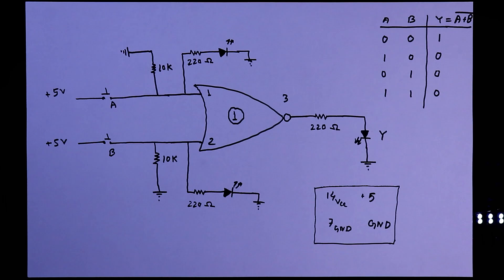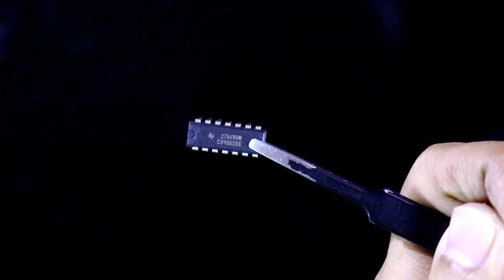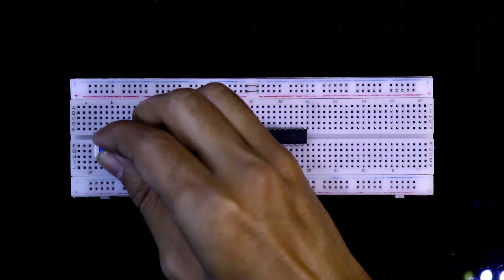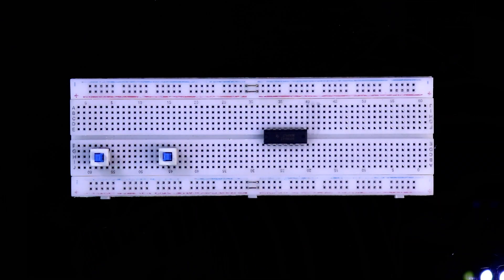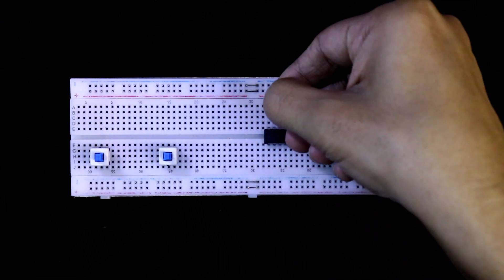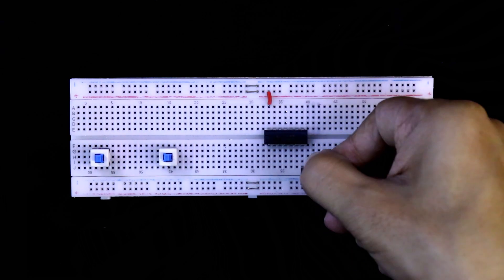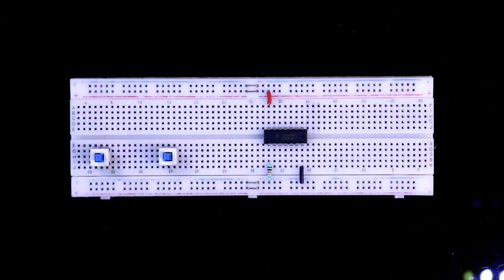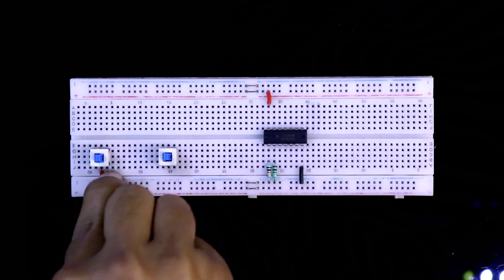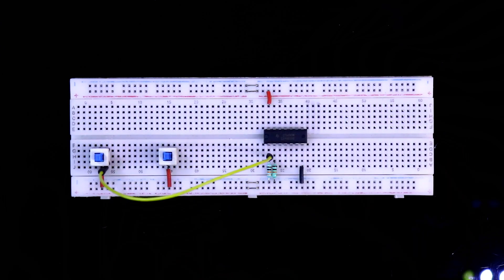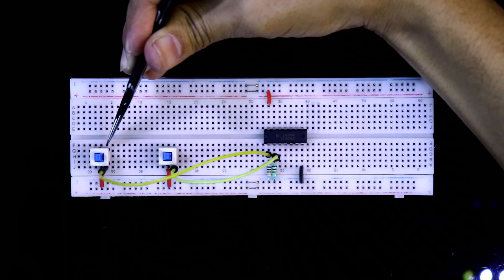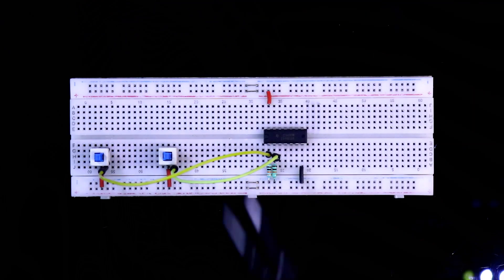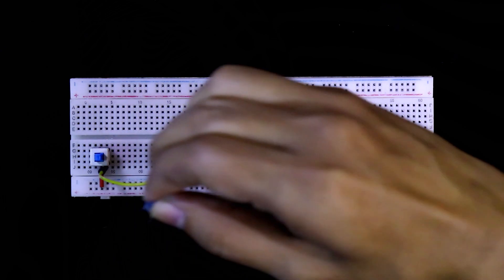IC 4001. Here is input switch A and B. I already explained about this switch, link in the description below. Pin number 14 is connected to the plus VCC. Pin number 7 is connected to the ground. With the pin number 1 and 2, I have connected the pull-down resistor. These both are 10 kilo ohms resistor. One pin of the switch should be connected to the plus VCC, input A and input B. This pin and this pin is same because it is connected in same column.